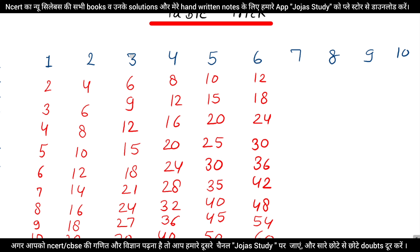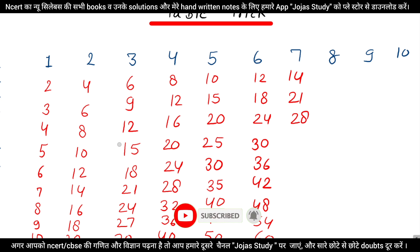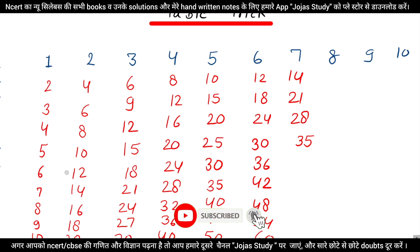Now we will make our 7 table, then our 8 table. So we will make our 70.